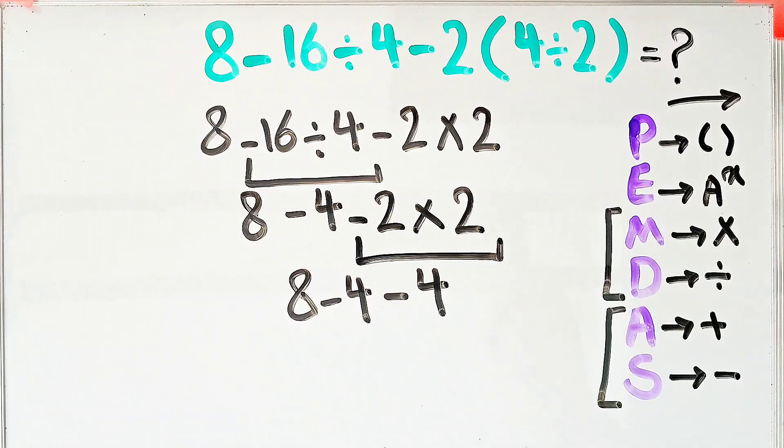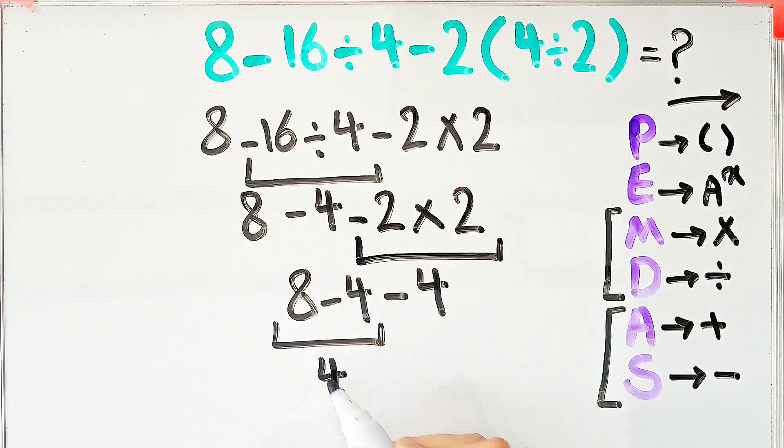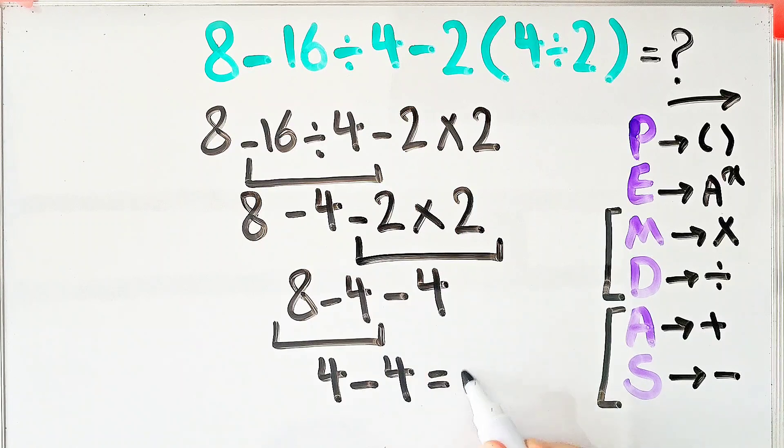8 minus 4 equals 4. And 4 minus 4 equals 0. The final answer of this question equals 0.